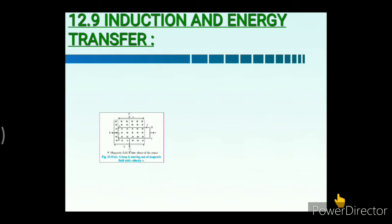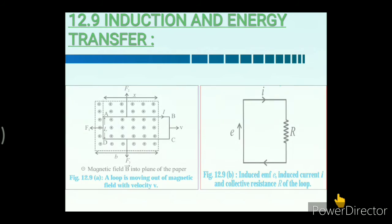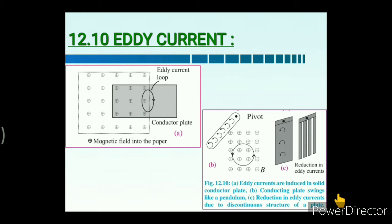We also discussed induction and energy transfer. Eddy currents are circulating currents induced in a metal block when it is placed or moved in a changing magnetic field. Applications of eddy currents include: deadbeat galvanometer, induction motor (speedometer), electric brake or induction brake, and induction furnace.